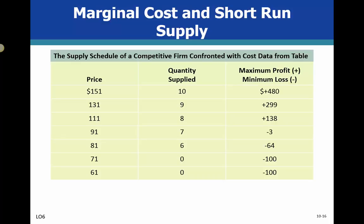In the shutdown case, if we did produce we would lose far more money than if we just stayed shut down. So those are the three scenarios: profit maximization, loss minimization, and shutdown. That covers the basic idea of the short run for a purely competitive firm and the three main questions we answer. We can look at it using a schedule of numbers or graphically — both approaches are helpful.